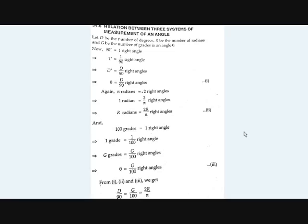Now let's start with the relation between the three systems of measurement of an angle. As we know, there are three systems: sexagesimal, centesimal, and radian system or circular system. Let's take D as the number of degrees, R as the number in radians, and G as the same measurement in grades.